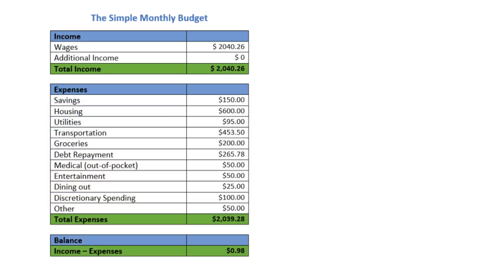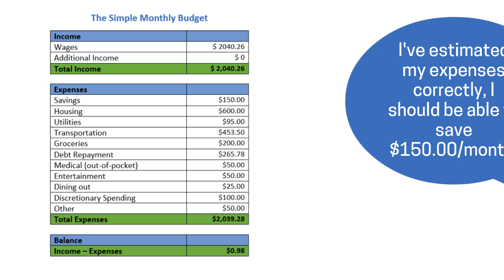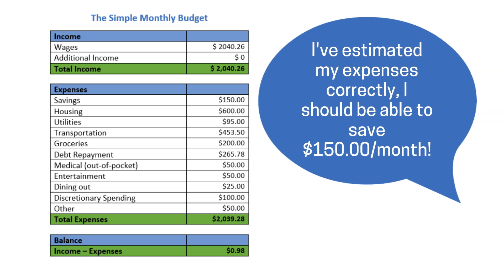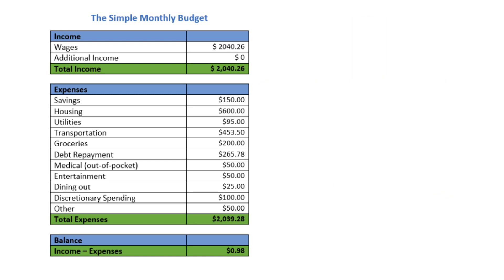A traditional budget determines if you have enough income to pay all of your expenses by listing out income and subtracting out expenses. This does not take into account cash flow or the timing of when income is received and expenses are due.